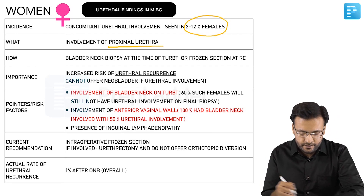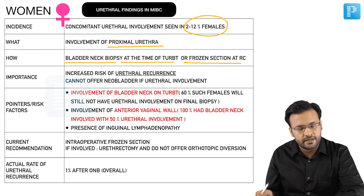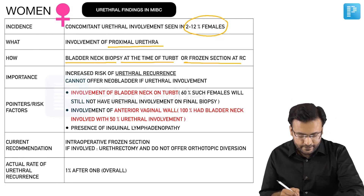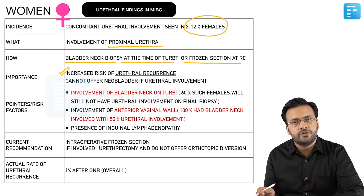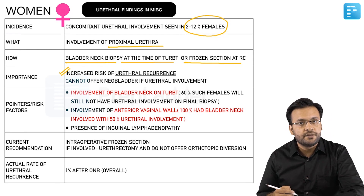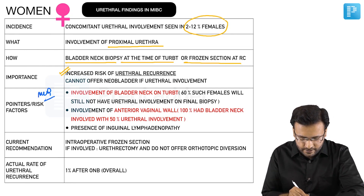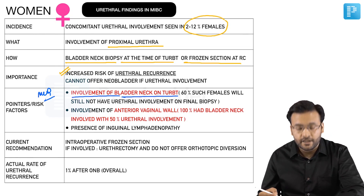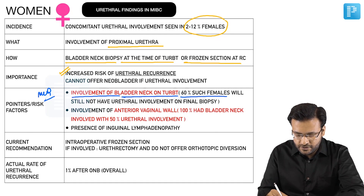In females, evaluation is done by a bladder neck biopsy at the time of TURBT or an intraoperative frozen section at radical cystectomy. The importance is that urethral involvement means increased risk of urethral recurrence and inability to offer a neobladder. The most important risk factor predicting urethral recurrence in women is involvement of the bladder neck on TURBT — however, it is important to note that despite bladder neck involvement being a significant factor, 60 percent of such females will still not have urethral involvement on final biopsy.